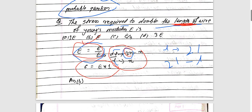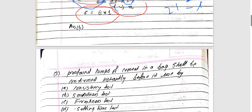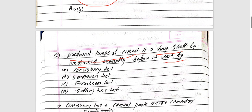Using a simple formula for this question. Now, a lump of cement in a bag must be confirmed before it is used. If you have any tests, the engineering license exam includes different tests: consistency test, soundness test, freshness test, and setting time test.